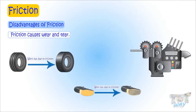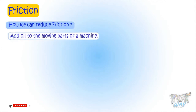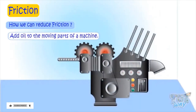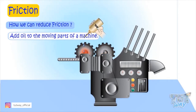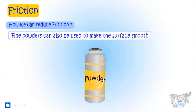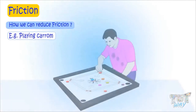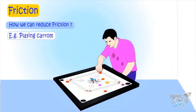Now let's learn how we can reduce friction where we do not need it. The moving parts of machines are oiled or greased to reduce the wear and tear due to friction. Fine powders can also be used to make the surface smooth — for example, before playing carrom on the board, we sprinkle talcum powder to make the surface smooth.